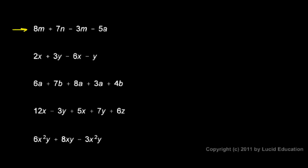Some more examples here. This one, 8m plus 7n minus 3m minus 5a. Well, I see the 8m and the minus 3m, those are both m terms, so those should be combined. The other terms are not m terms,